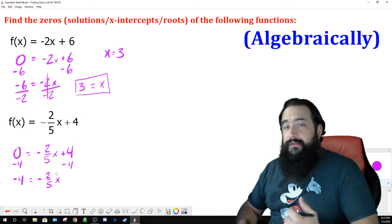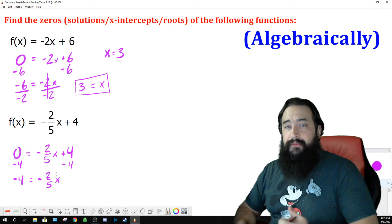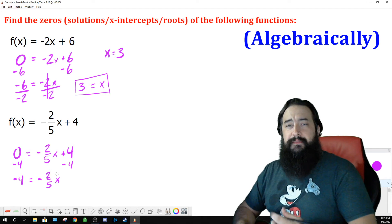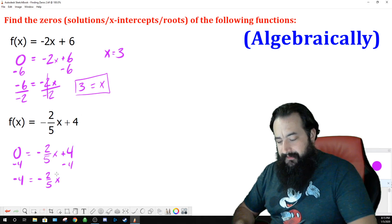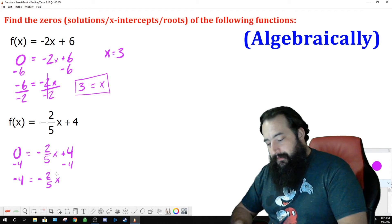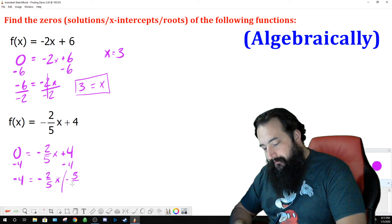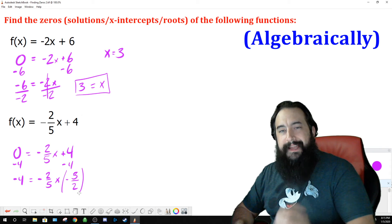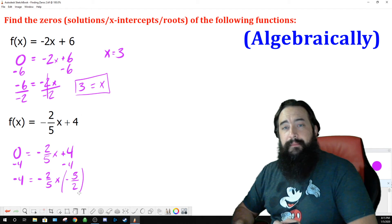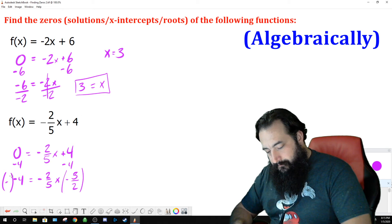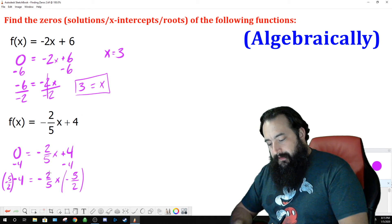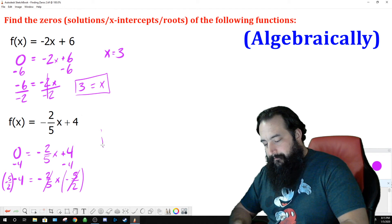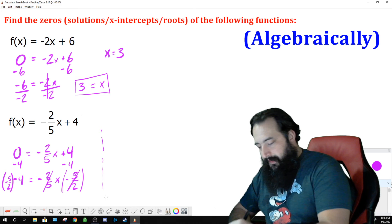Now, to undo multiplication, you multiply by the reciprocal. This works a lot better with fractions if you actually just multiply by the reciprocal instead of thinking about dividing both sides by the same thing that's multiplying x. I'm going to multiply both sides by negative 5 over 2. That's the reciprocal of negative 2 fifths. By doing this, we will cancel that out. That's the inverse property of multiplication. The negative 2 fifths and the negative 5 halves cancel out on the right-hand side, and we have just x.